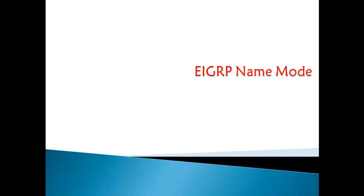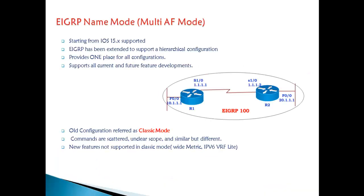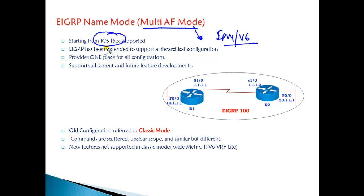In this video, I'm going to talk about the new EIGRP Named Mode configuration - the enhanced features added in the new EIGRP starting from the IOS 15.x database versions. EIGRP Named Mode is also called multi-address family mode because multiple IPv6 and IPv4 configurations can be done under the same routing process. This is supported from the new IOS 15.x releases and will be tested in your CCIE Routing and Switching version 5 exams.